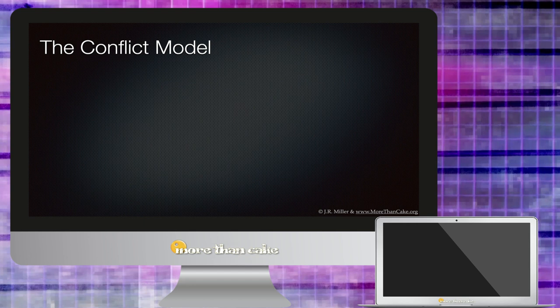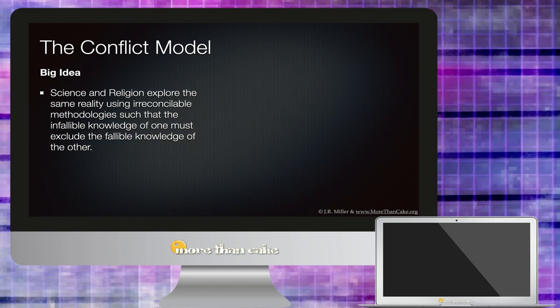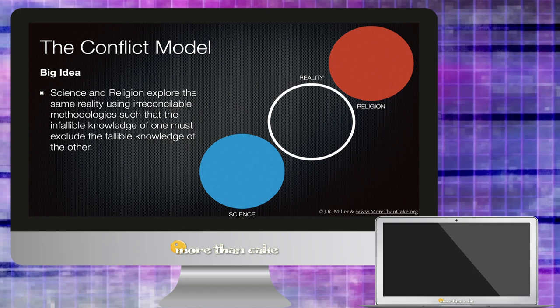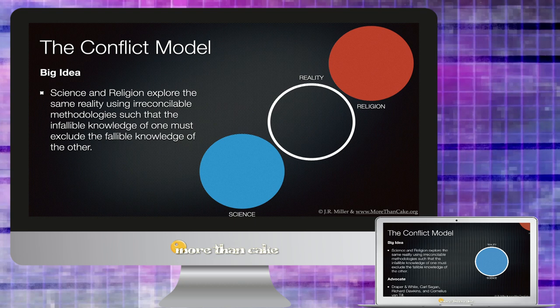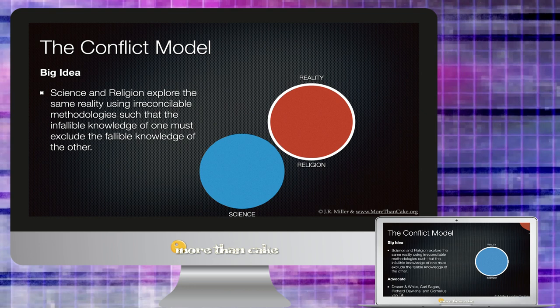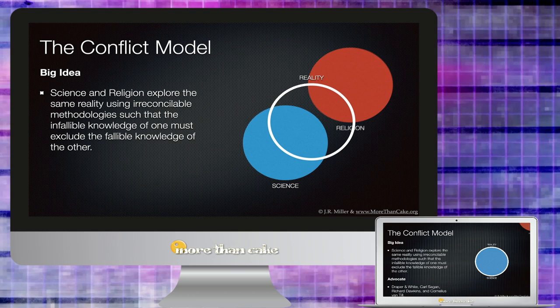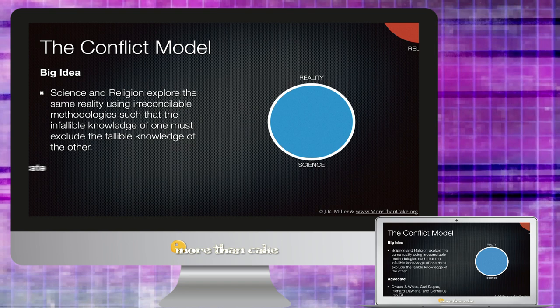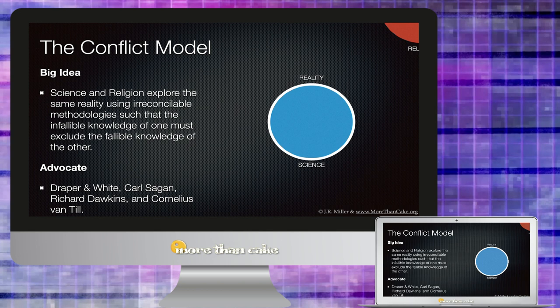So let's begin with the Conflict Model. The big idea here is that science and religion are said to explore the same reality using irreconcilable methodology, such that the infallible knowledge of one must exclude the fallible knowledge of the other. So it doesn't matter whether you are a religious person and you think all knowledge begins with religious truth and that pushes aside or eliminates scientific knowledge, or if you are a scientifically minded person and you think the more we know about science the less room that leaves for God. Both of these approaches really share that conflict model—that their methodology is the infallible source of truth and the other methodology is flawed and has no place.